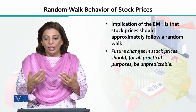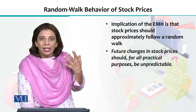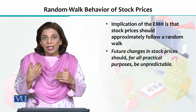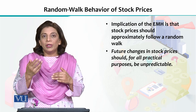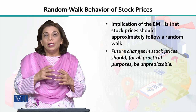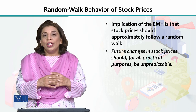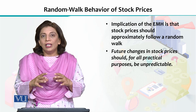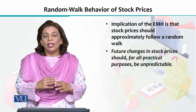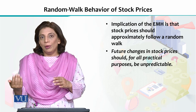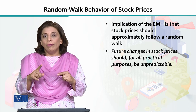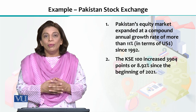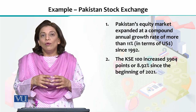So when we observe and analyze stock prices over time, they approximately follow a random walk pattern. Future changes — as I mentioned — whether tomorrow, the day after, next month, or three months from now, whatever the price of any stock will be, it becomes unpredictable. This means that if we assume financial markets are working perfectly efficiently according to the efficient market hypothesis, then stock prices show a random walk pattern, and based on this, future stock prices cannot be predicted.